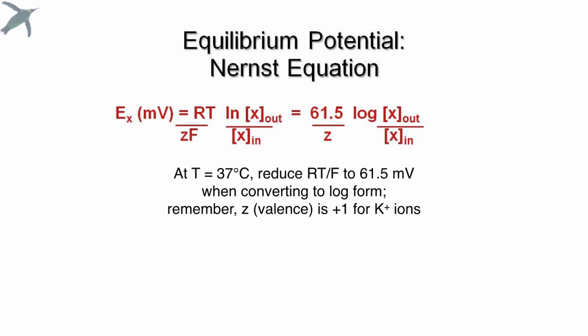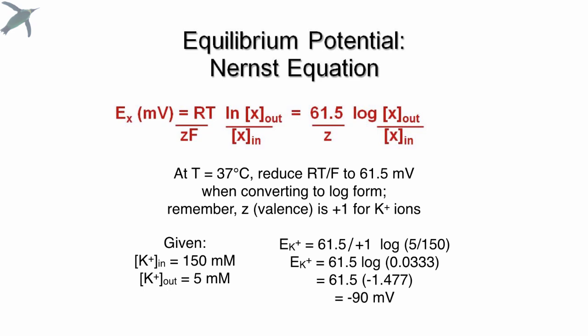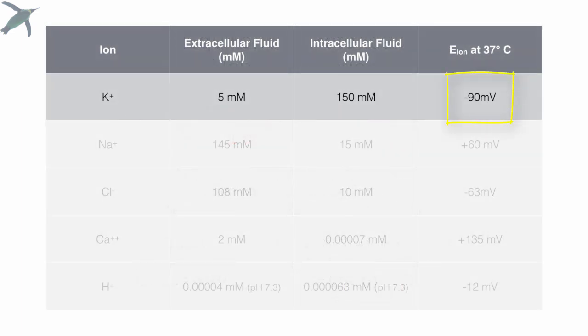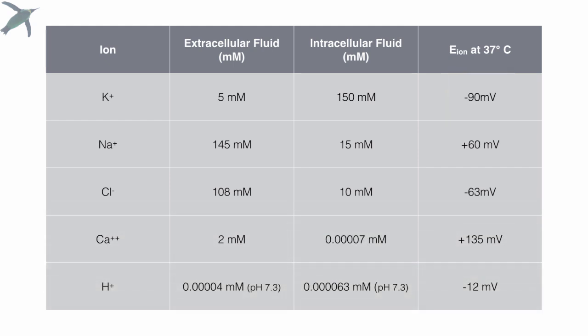Like I said, most of these are constants. We're going to be at 37 degrees C in the human body. The valence, that is the Z, is plus 1 because we're talking about potassium. It would be plus 2 for calcium ions, et cetera. So given those two values, intracellular and extracellular, if you do the math, you get minus 90 millivolts. That is where that equilibrium potential for potassium comes from.